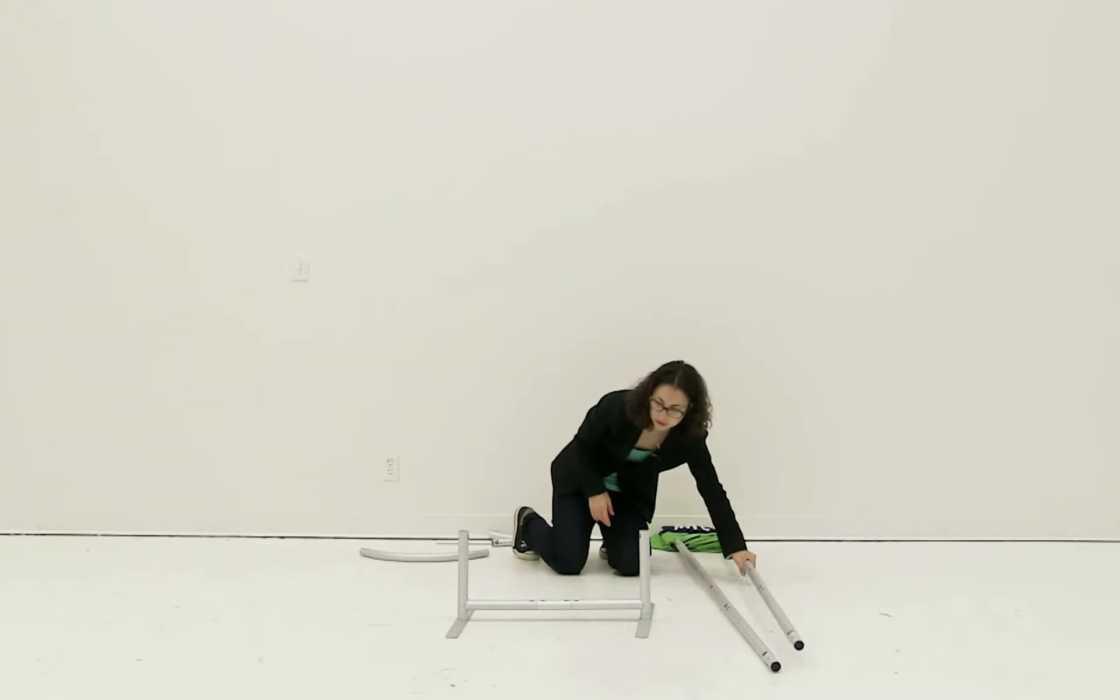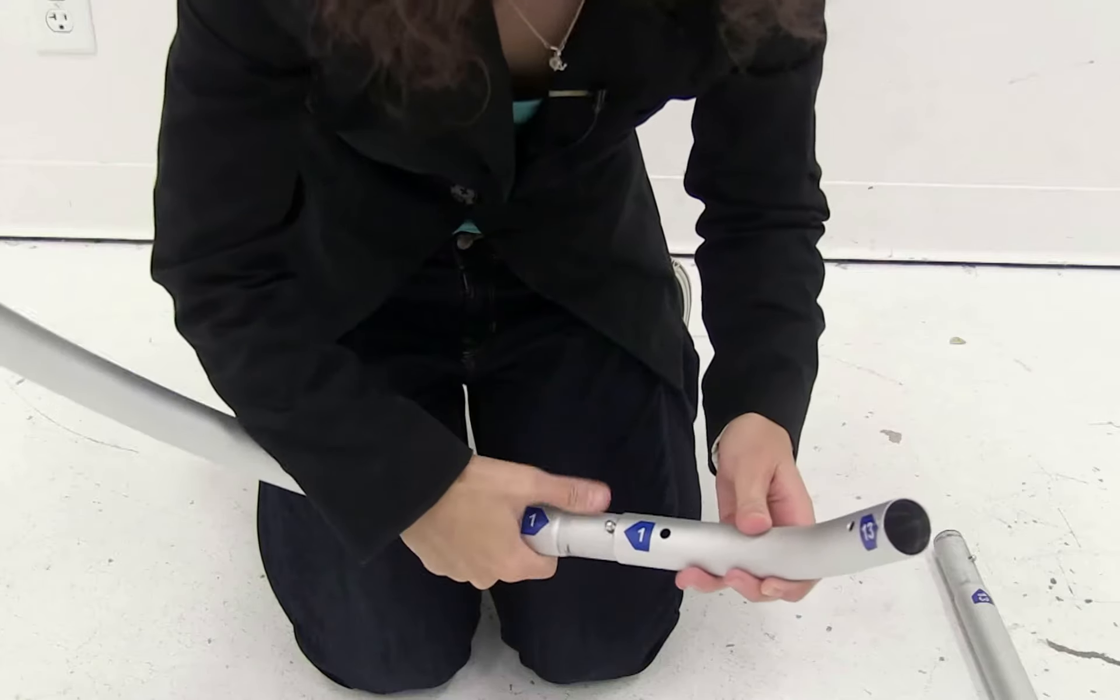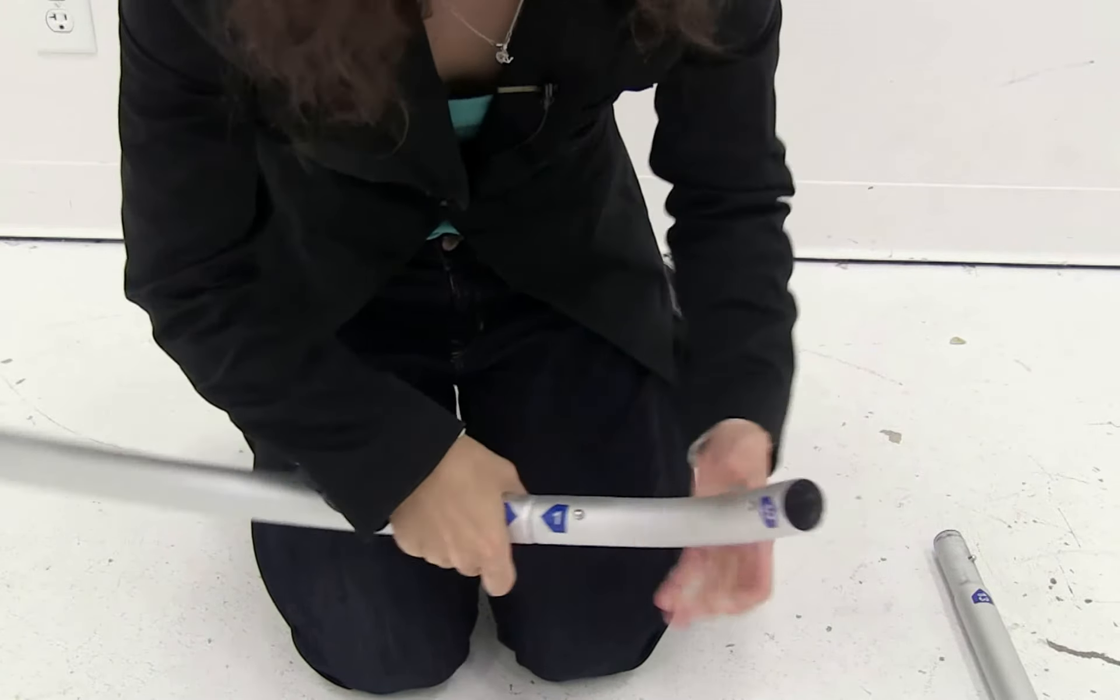I have my poles connected together and the next thing I'm going to do is start connecting the arc to the poles. I'm just going to match up the numbers to the correlating numbers on the pole. You're going to do this for all the pieces, connecting them together matching the numbers.